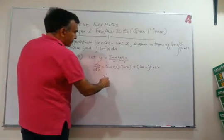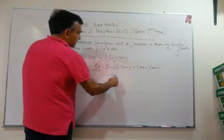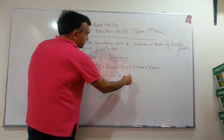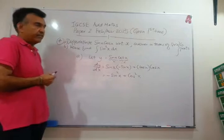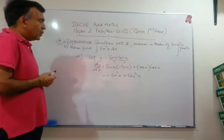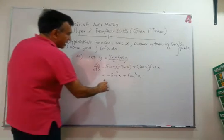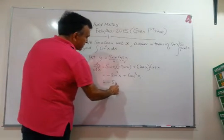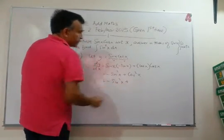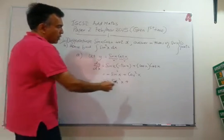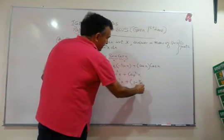So we will have minus sin squared x plus cos squared x. So you are asked to give your answer in terms of sin x. So let's clean that up a little bit. We have minus sin squared x. What is cos squared x? 1 minus sin squared x.